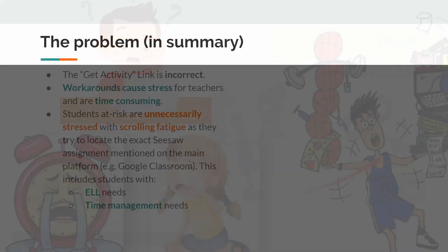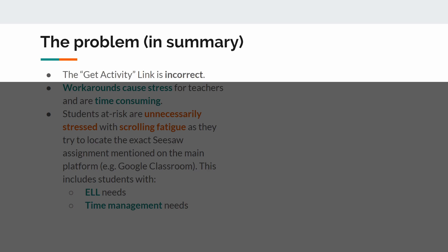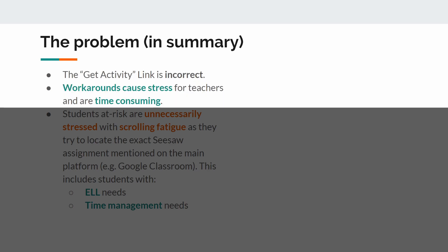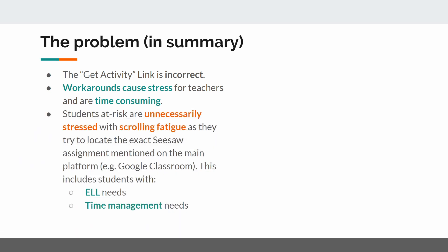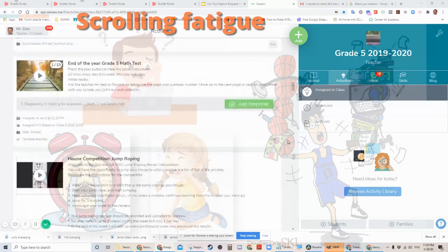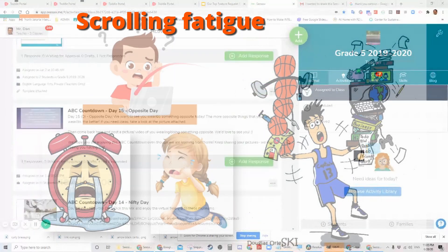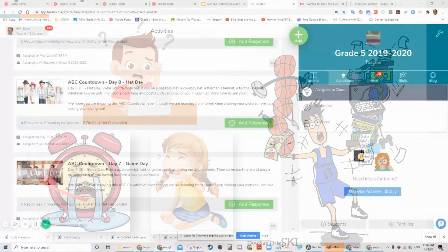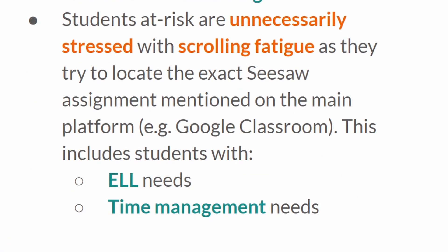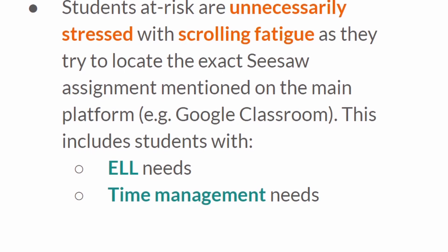Problem in summary: the Get Activity link is incorrect. Workarounds cause stress for teachers and are time consuming. Students at risk are unnecessarily stressed with scrolling fatigue as they try to locate the exact Seesaw assignment mentioned on the main platform, like Google Classroom — including students with English language needs and students with time management needs.